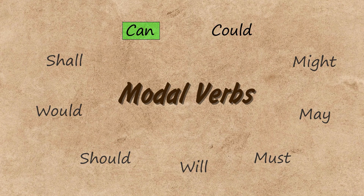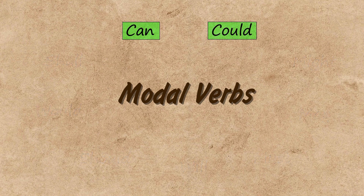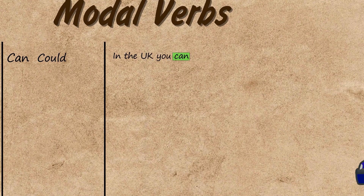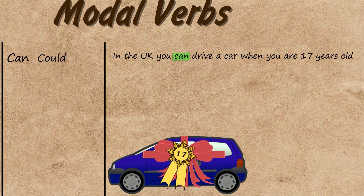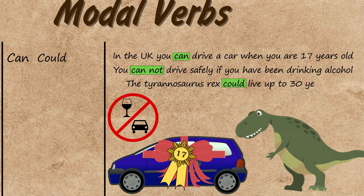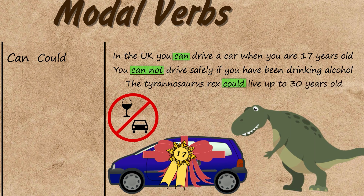The modal verbs can and could are often used to express ability. For example, in the UK you can drive a car when you are 17 years old. The negative can also be used to express the lack of ability — you cannot drive safely if you have been drinking alcohol. If you want to express ability in the past you can use could. For example, the Tyrannosaurus rex could live up to 30 years old.